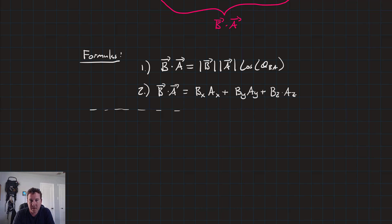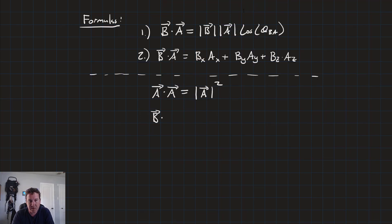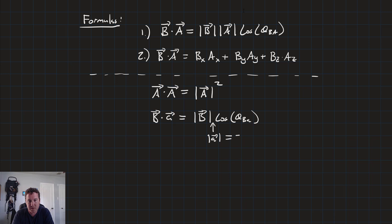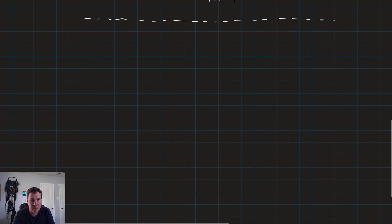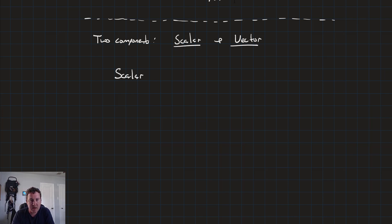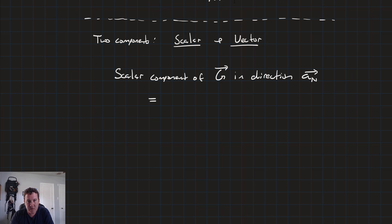There are a few other properties. If we have a vector dotted with itself, we get just the magnitude of the vector squared. And if we take the dot product of a vector with a unit vector, that equals the magnitude of the vector times the cosine of the angle between them — since the magnitude of the unit vector is 1. When we talk about the components of a vector, there are two: the scalar component and the vector component. The scalar component is just the dot product — for example, the scalar component of vector g in the direction of some unit vector a sub n equals g dotted with a sub n.